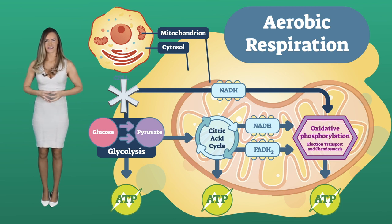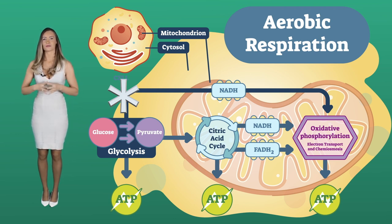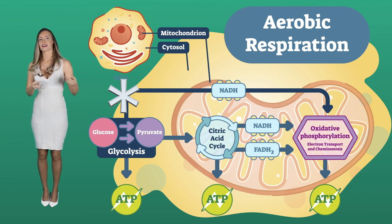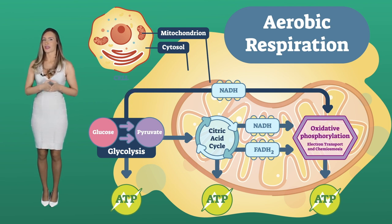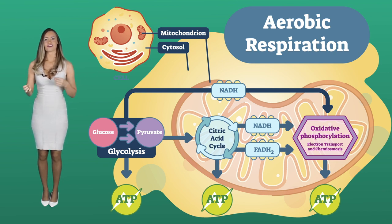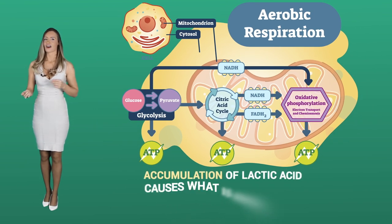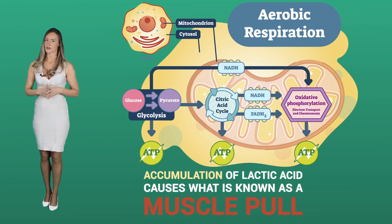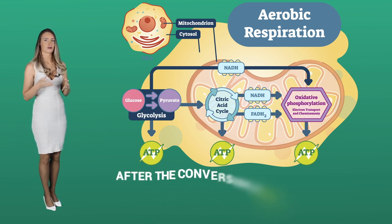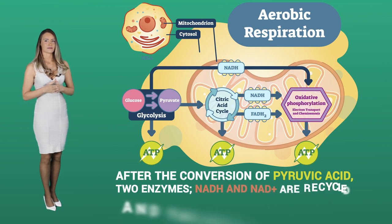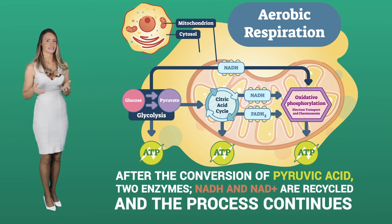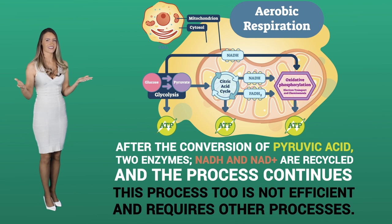Glycolysis is an anaerobic process and involves the breakdown of glucose in order to obtain ATP. But it is not a fast process, and produces only 2 ATP and pyruvic acid molecules. When there is not enough oxygen, the pyruvic acid forms lactic acid. Accumulation of lactic acid causes what is known as muscle pull. After the conversion of pyruvic acid, two enzymes, NADH and NAD+, are recycled and the process continues.